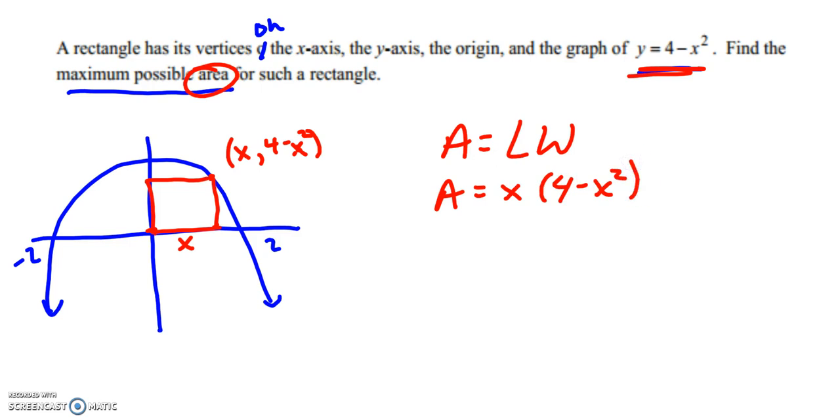We have an ordered pair there, and we know we're talking about area of our rectangle, which is base times height, length times width. We have one dimension as x, and the other dimension is our y value, which is 4 minus x squared. So now we have a formula for our area. Distribute through, and we're trying to find the maximum. So take the derivative, set it equal to 0 for our first derivative test.